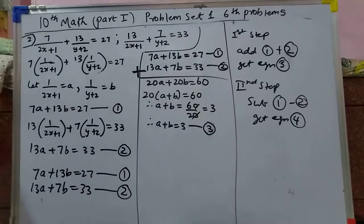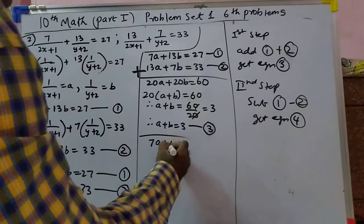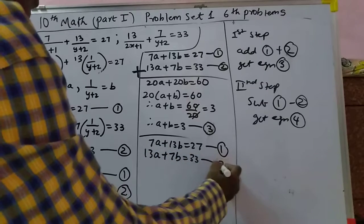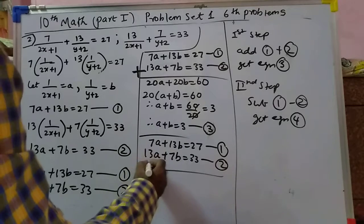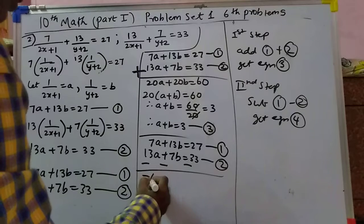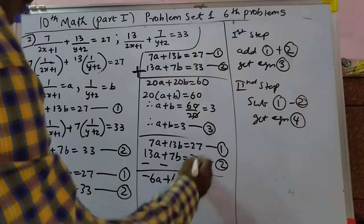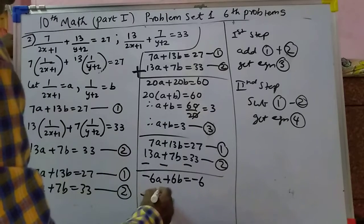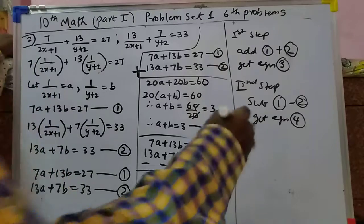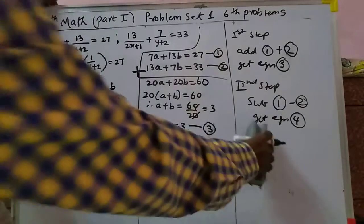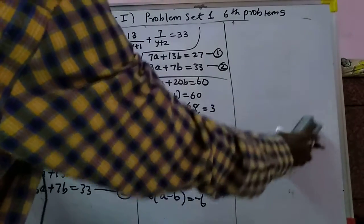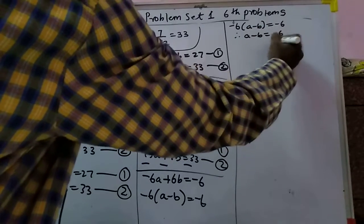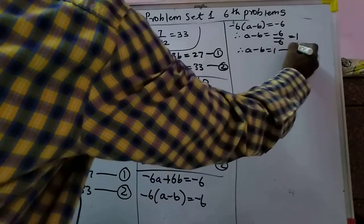Now subtracting equation 2 from equation 1: 7a plus 13b minus 13a minus 7b equals 27 minus 33. This gives minus 6a plus 6b equals minus 6. Taking minus 6 as common: a minus b equals minus 6 upon minus 6 equals 1. Therefore a minus b equals 1, equation 4.